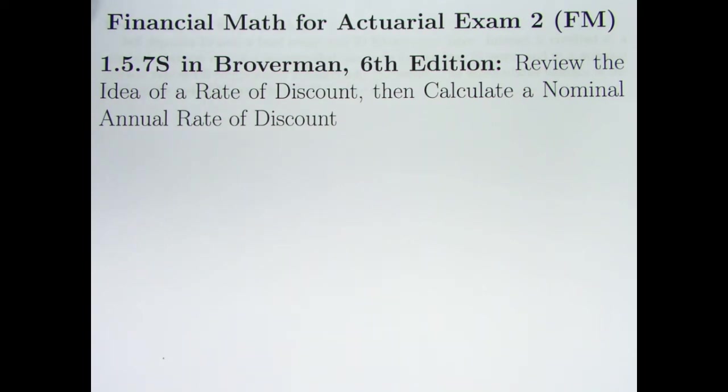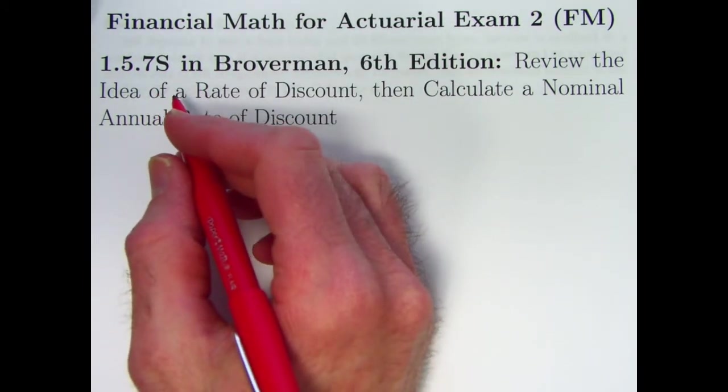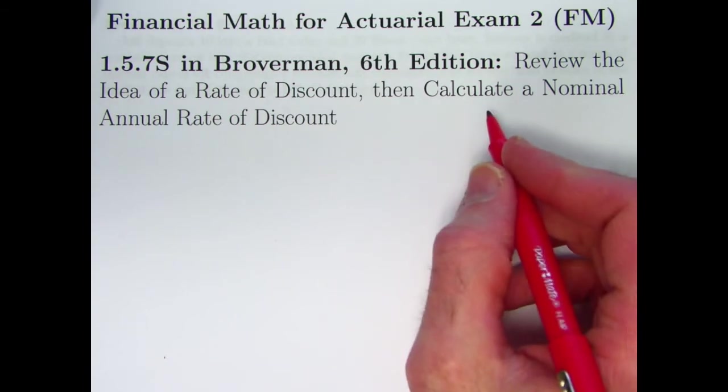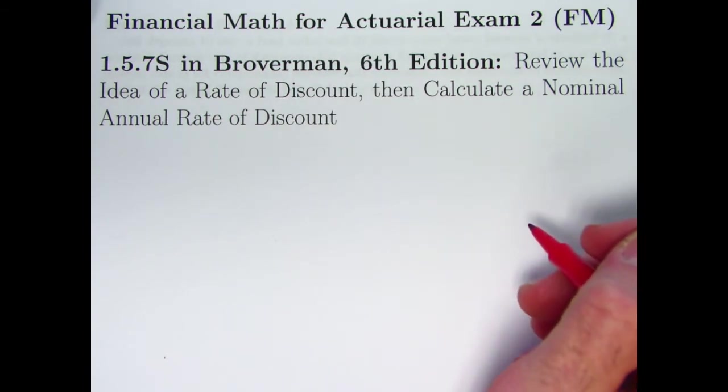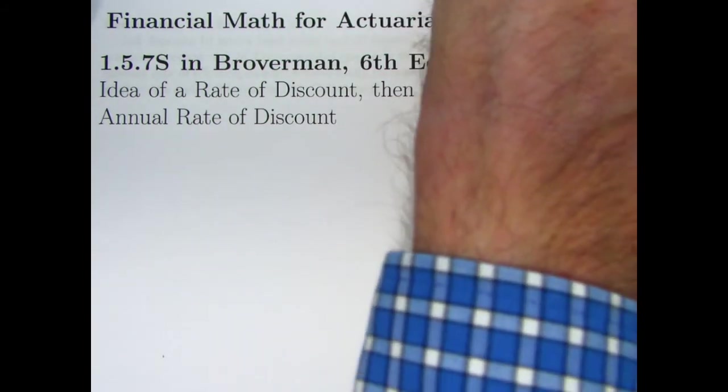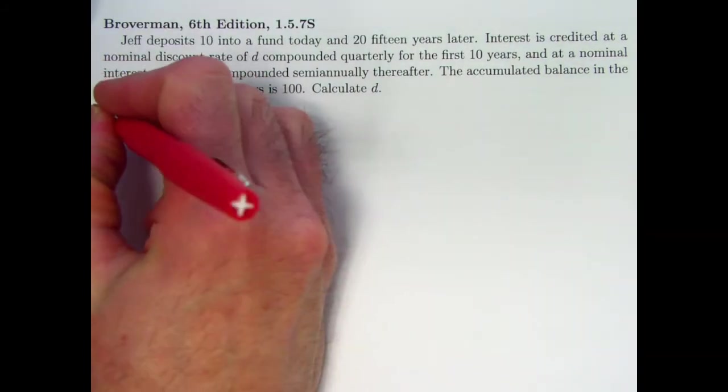Hi, this is my thirteenth video on helping people study for actuarial exam 2 on financial math, and in this video we'll look at problem 1.5.7S in Broverman, ultimately calculating a nominal annual rate of discount.